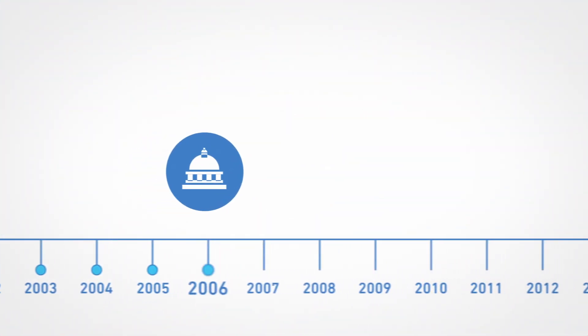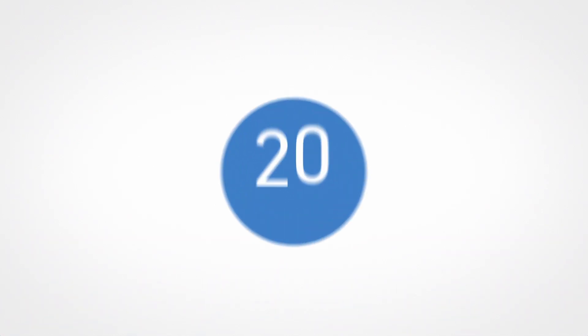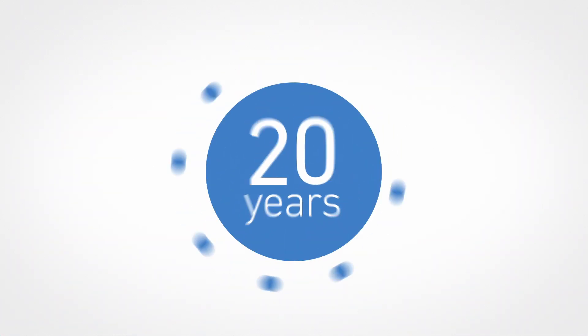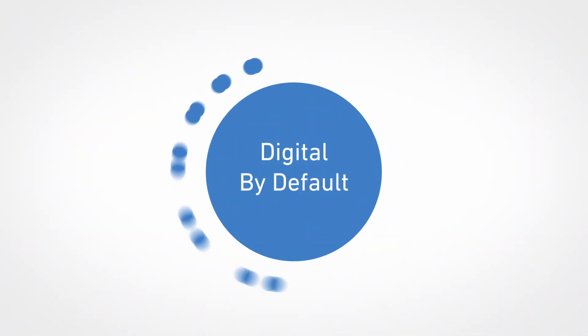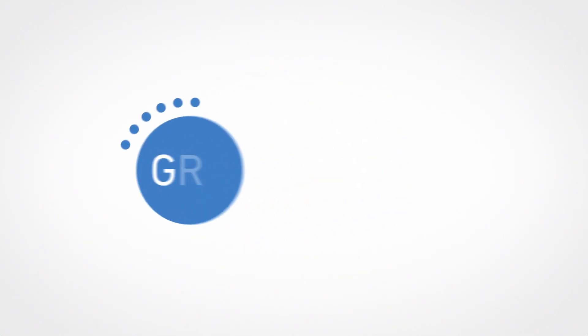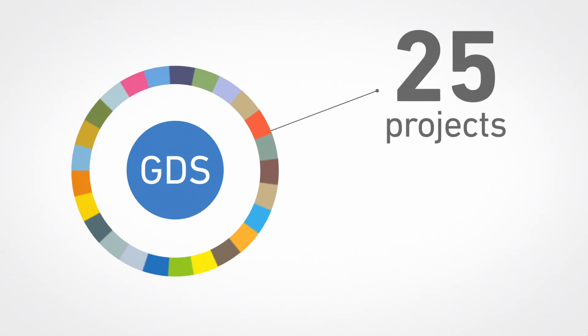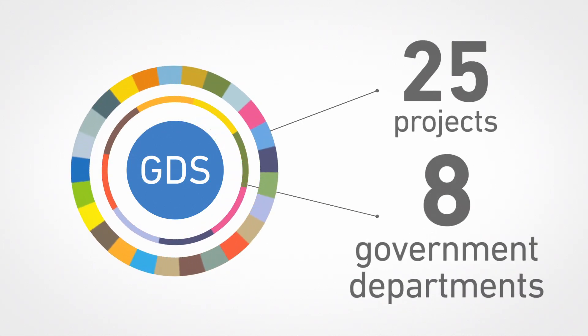We've been working for over 20 years in the UK public sector for various organizations. Kainos has been part of the Government Digital Services Digital by Default program from the start and has worked on over 25 digital projects across eight government departments.